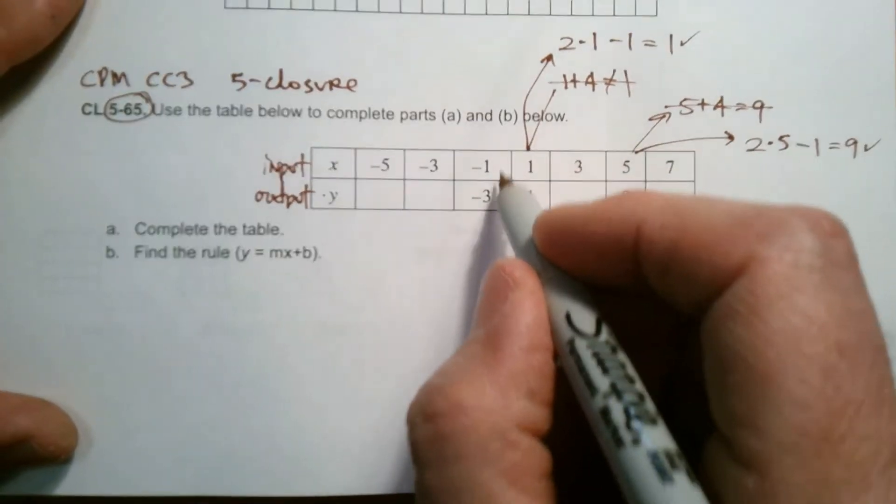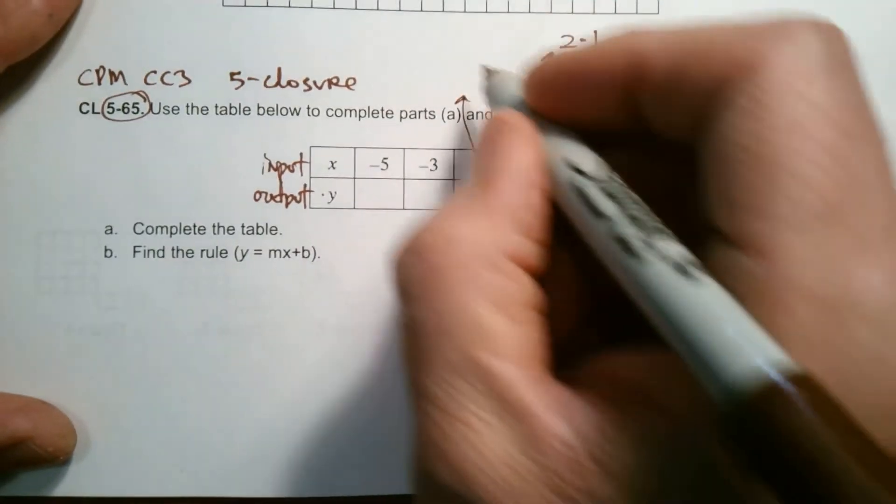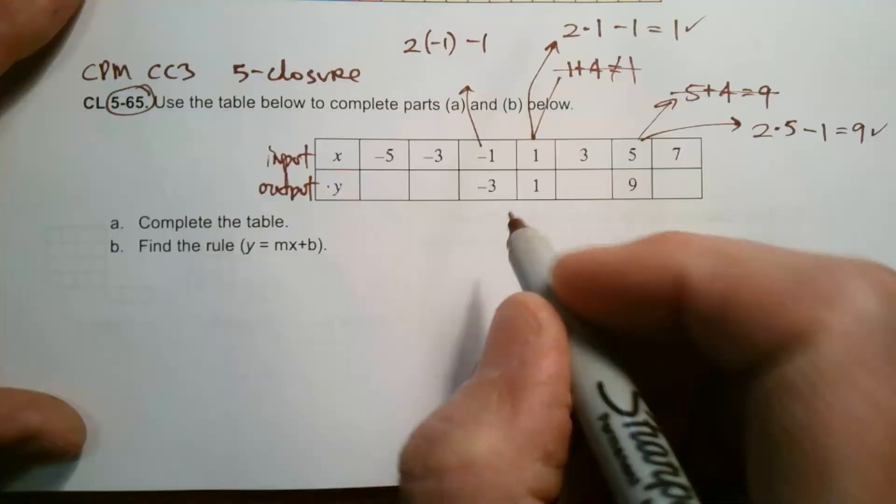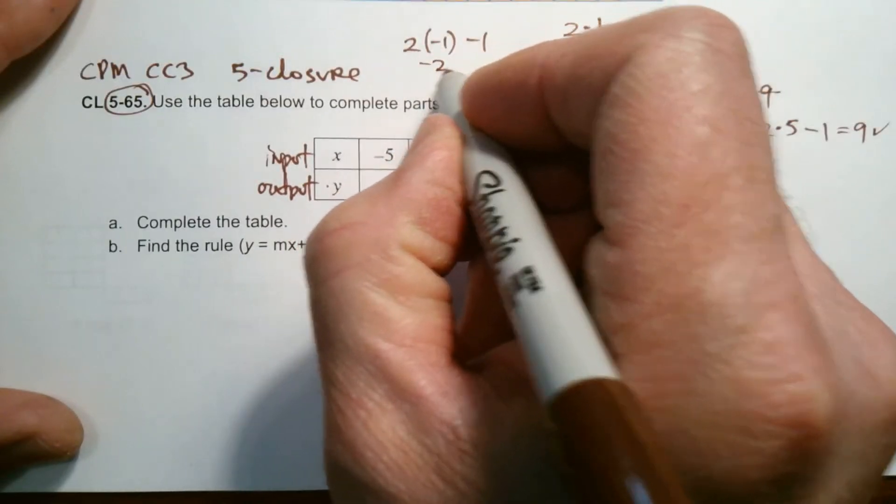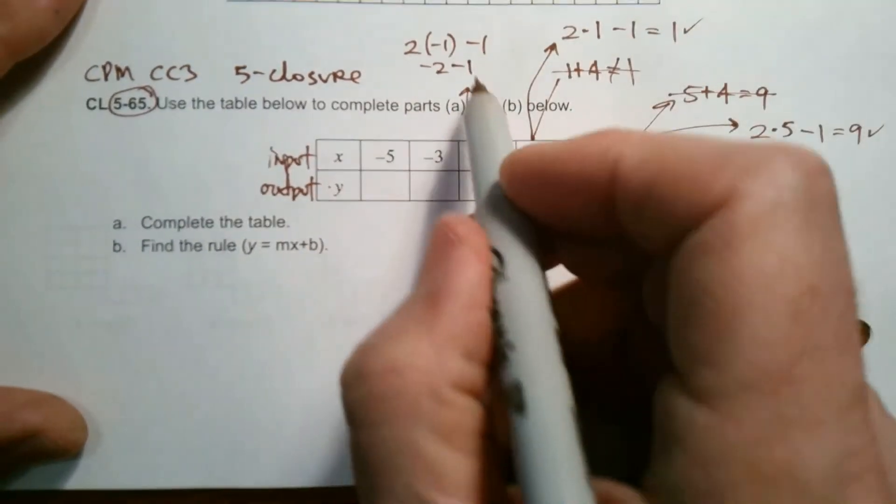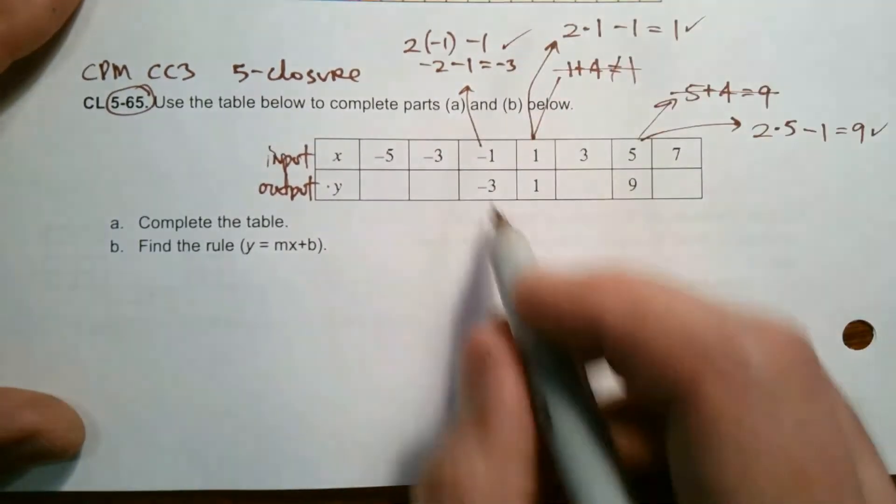So I'll take the negative one and I'll say two times negative one minus one. Two times negative one is negative two. And then negative two minus one. Sure enough, that does equal negative three. So yeah, that checks out too. So there's my pattern.